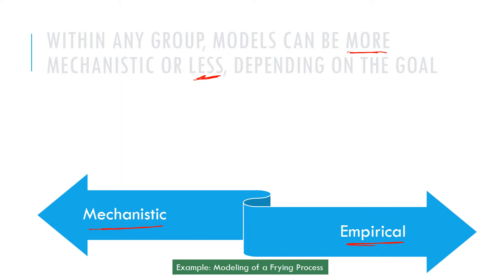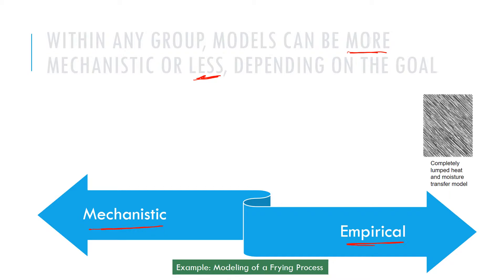Let's go over this with an example of modeling a frying process using a range of approaches. Models can be as simple as a lumped system where the parameters are fitting parameters obtained from experimental data — for example, water loss versus time fitted to a totally lumped parameter moisture transfer model.